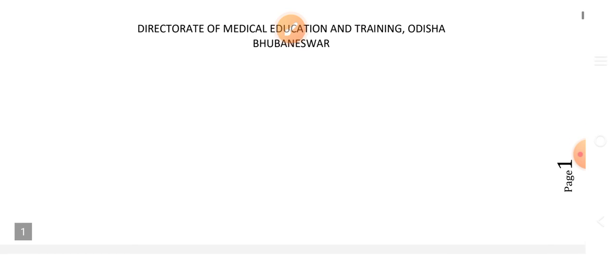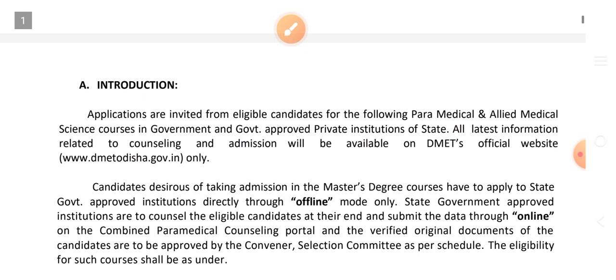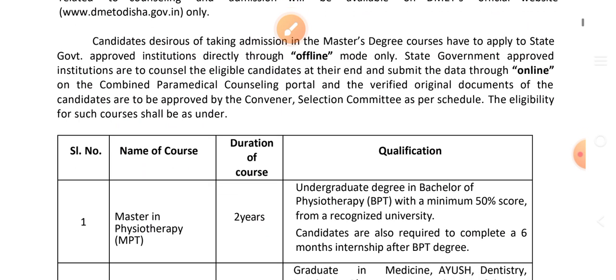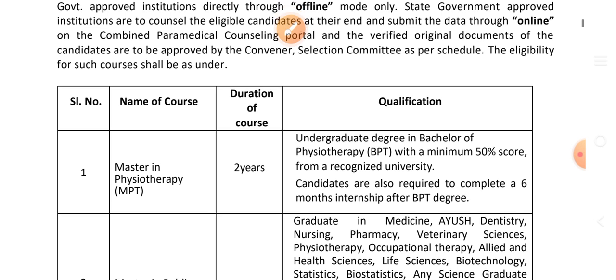Director of Medical Education and Training. The name of the course is Master in Physiotherapy, MPT. Duration of the course: two years. Eligibility: undergraduate degree in Bachelor of Physiotherapy, BPT, with a minimum 50% score from a recognized university. Candidates are also required to complete a six-month internship after the BPT degree.